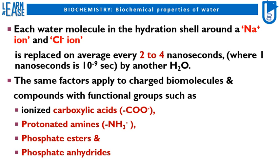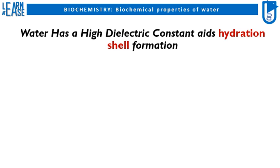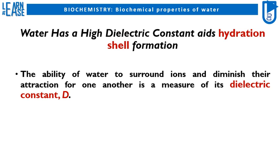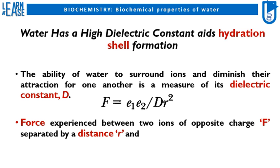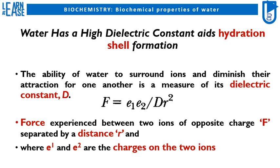Water has a high dielectric constant that aids hydration shell formation. The ability of water to surround ions and diminish their attraction for one another is a measure of its dielectric constant D. The equation here describes the dielectric constant, where Force F is experienced between two ions of opposite charge separated by a distance R, and where E1 and E2 are the charges on the two ions.